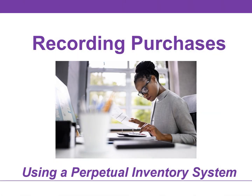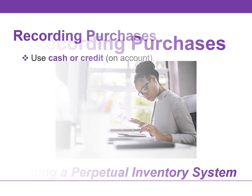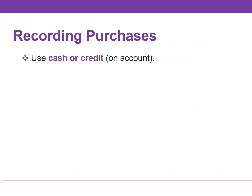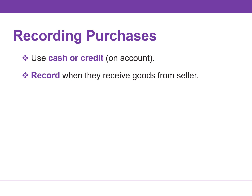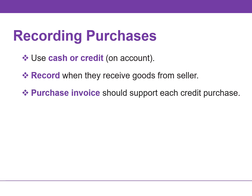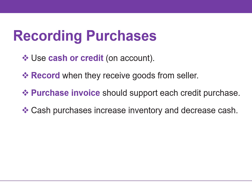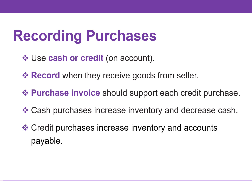In this video, we will explain recording purchases using a perpetual inventory system. Companies purchase inventory using cash or credit. They normally record purchases when they receive the goods from the seller. Every purchase should be supported by a business document that provides written evidence of the transaction, such as a purchase invoice. Companies record cash purchases by an increase in inventory and a decrease in cash. Credit purchases are recorded by an increase in inventory and an increase in accounts payable.